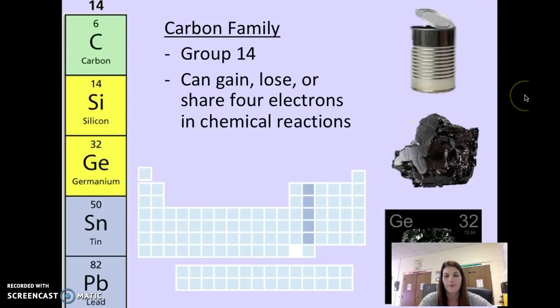There are some examples right here to the left. Carbon, silicon, germanium, tin, and lead are all in the carbon family. Some examples of where you would find some of these elements: Tin would be like in a tin can, a soup can. This is coal, which is the ordinary form of carbon, which you would find in the ground. And also germanium is an example that's found in the carbon family.